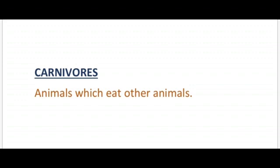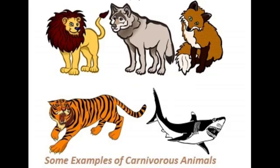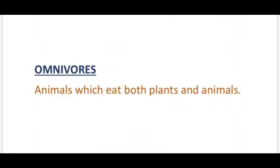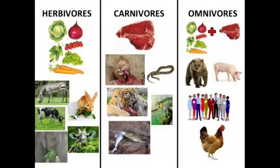The second type is carnivorous animals — animals which eat other animals. Examples: lion, tiger, wolf, fox. The third type is omnivorous animals — animals which eat both plants and animals. Do we humans eat both animals and plants? Yes, so we are omnivores. These are the examples of herbivores, carnivores, and omnivores.